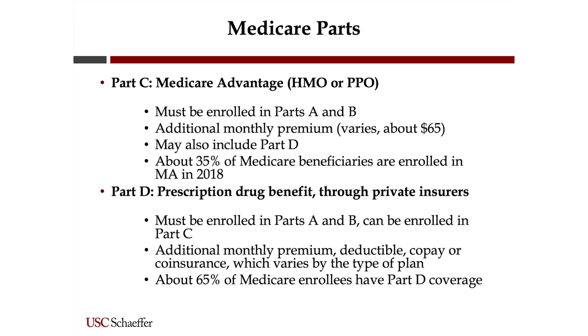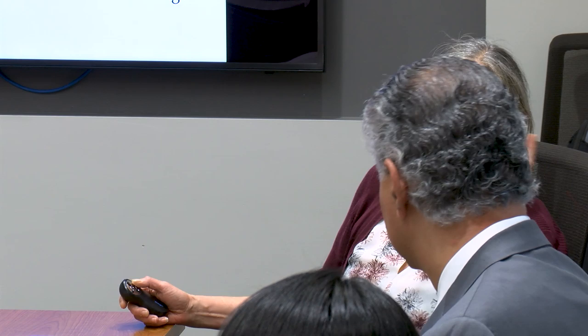Part D is the prescription drug benefit, which started in 2006 through private insurers. You need to be enrolled in Parts A and B, and there's an additional monthly premium, deductibles, copays, and coinsurance — all of which can vary by the type of plan. About 65% of Medicare enrollees have Part D coverage.